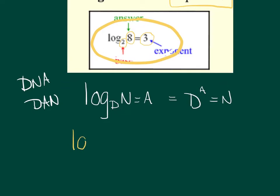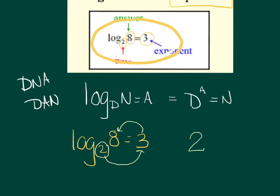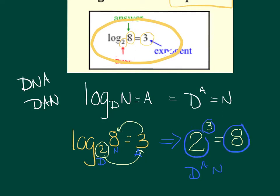For example, the example they gave us: log base 2 of 8 equals 3. You start at the base, go outside, back to the inside, so you get 2 cubed equals 8. Using DNA → Dan: D-A-N gives you 2 to the 3rd equals 8. So if that rule helps you, all the merrier, and hopefully we can get these down.